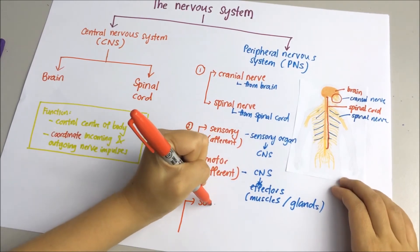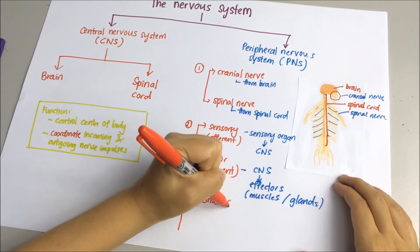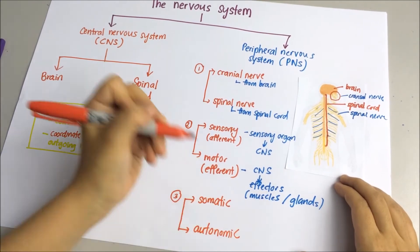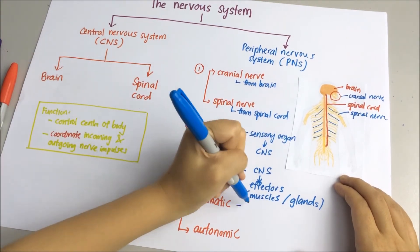We can also divide the nervous system into somatic and autonomic. Somatic nervous system regulates the movement of your skeletal muscles.